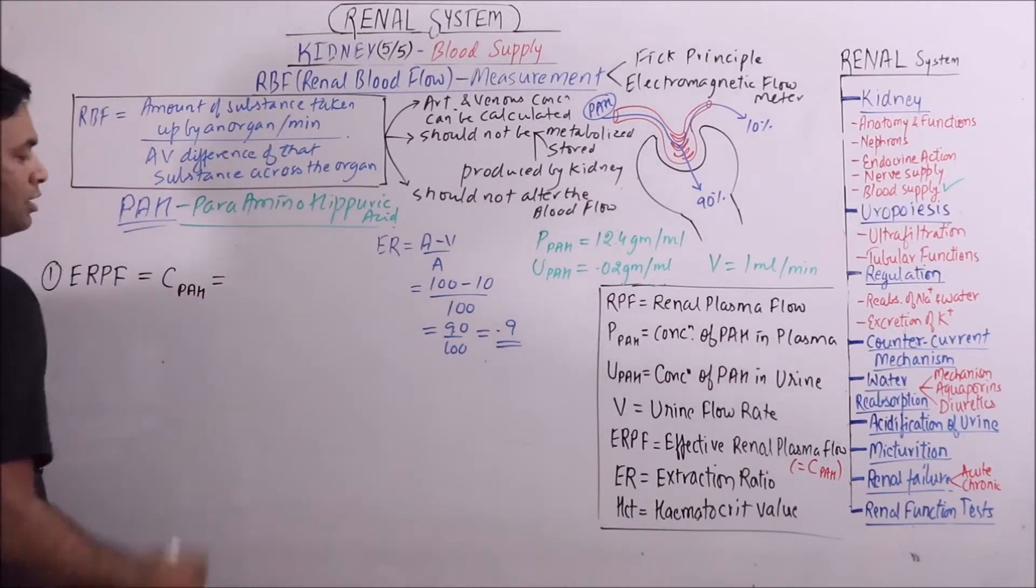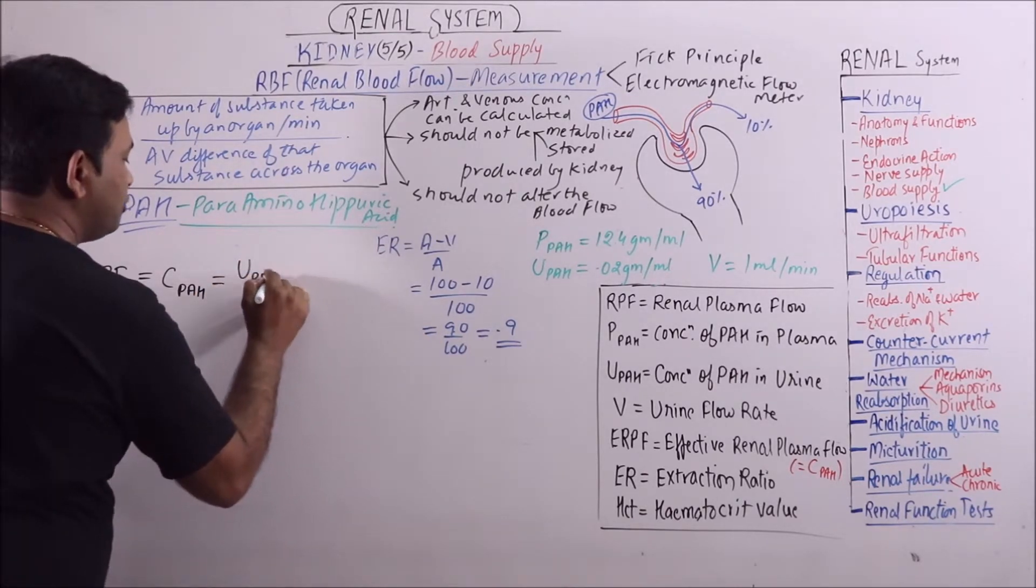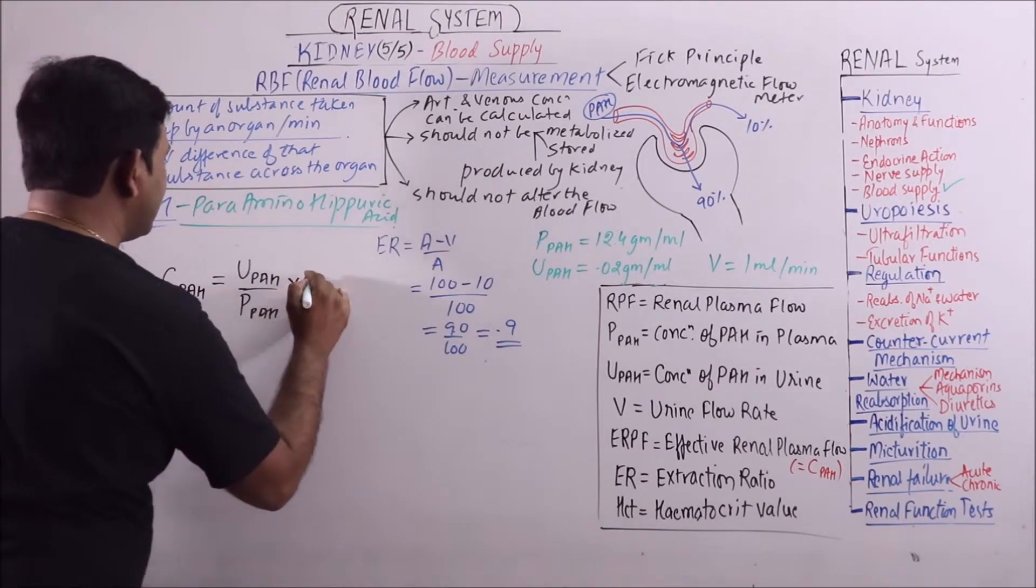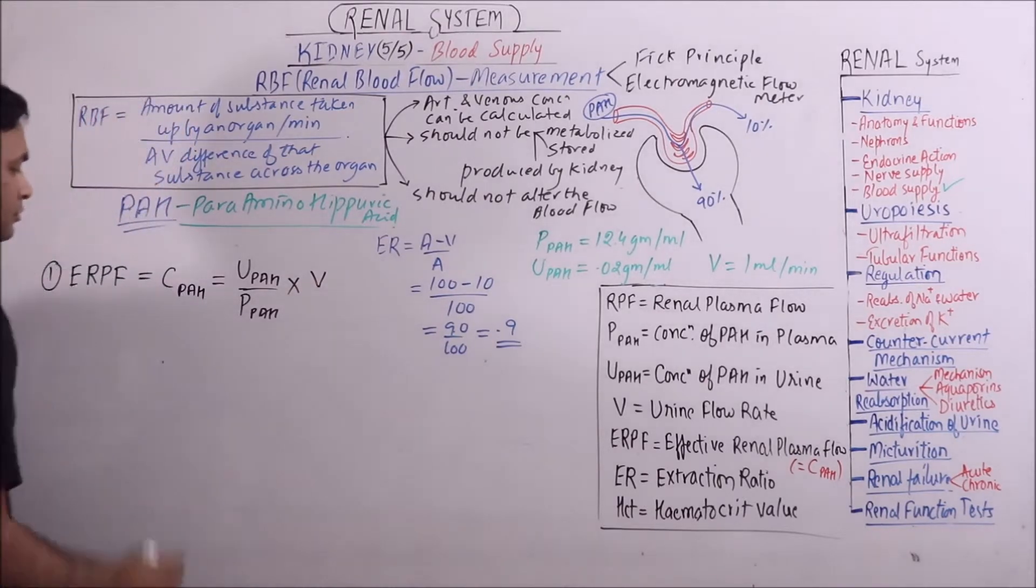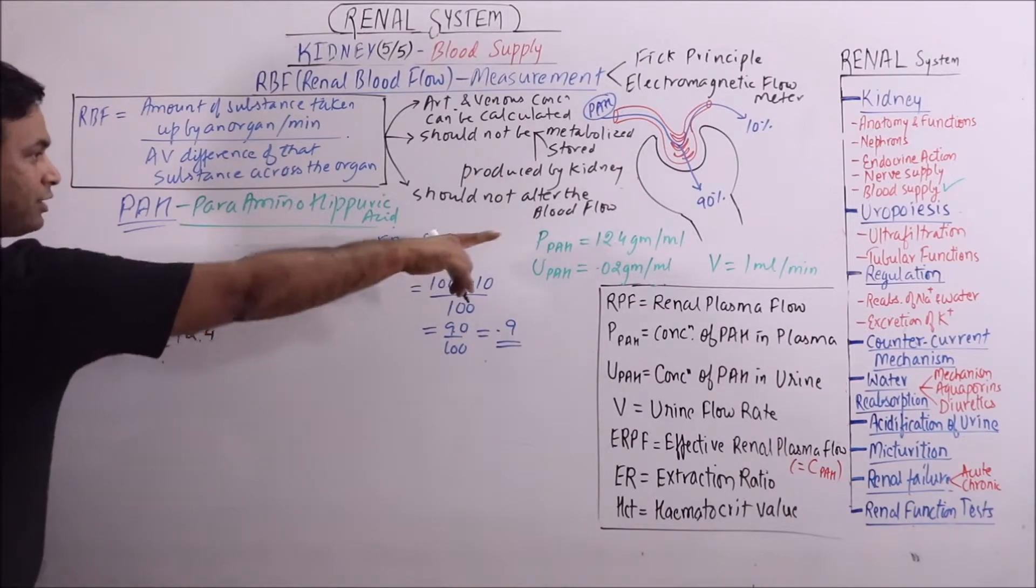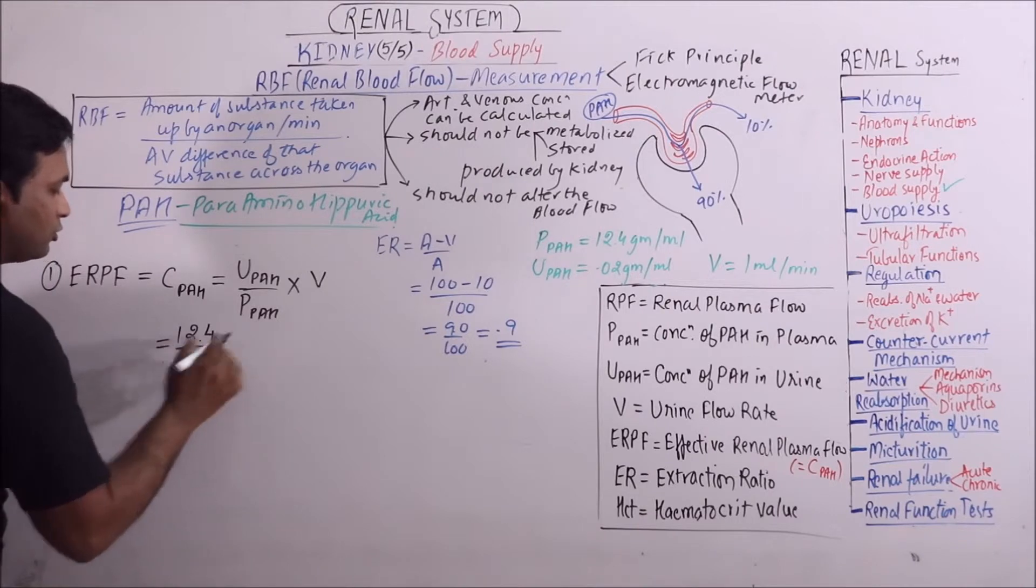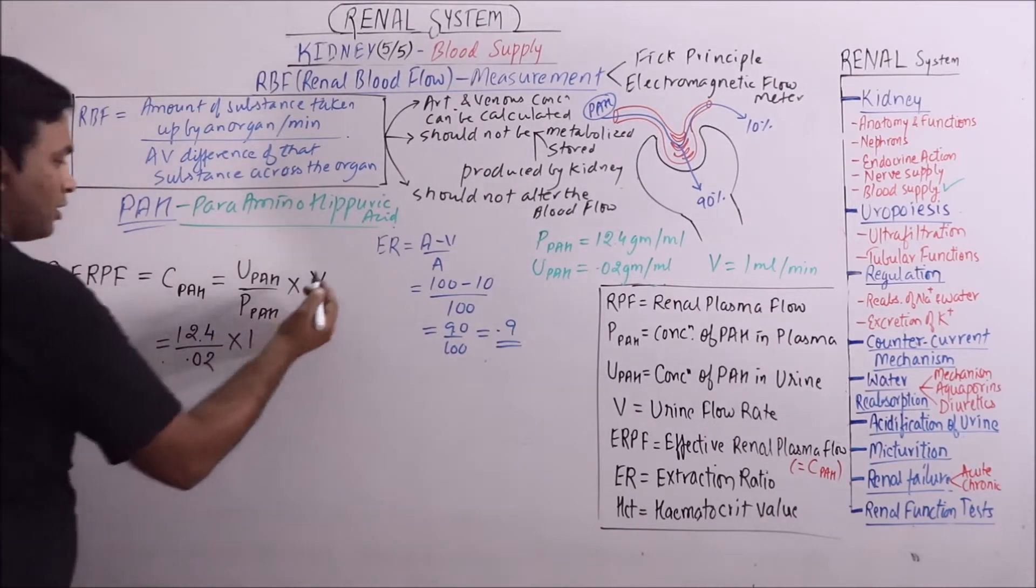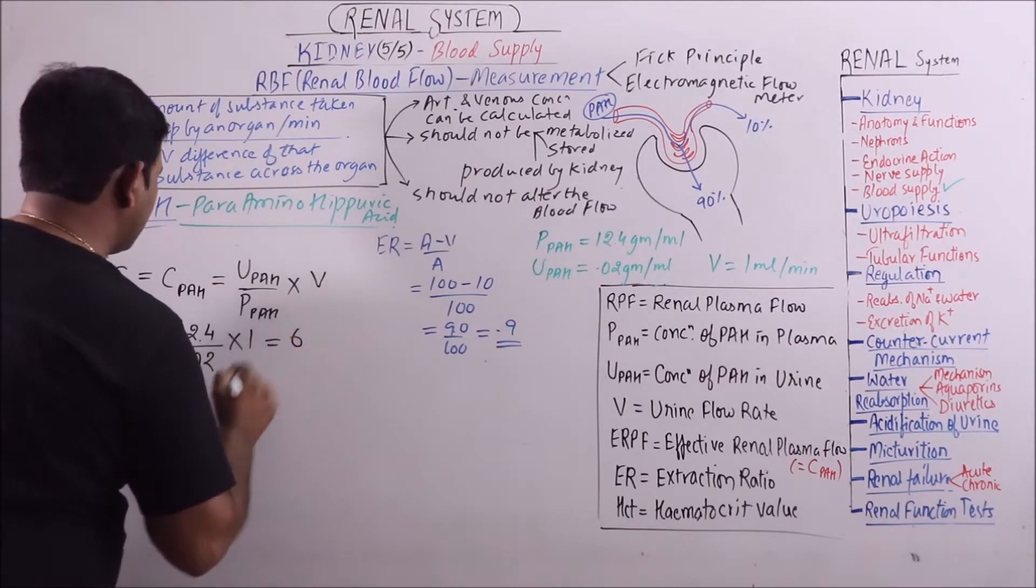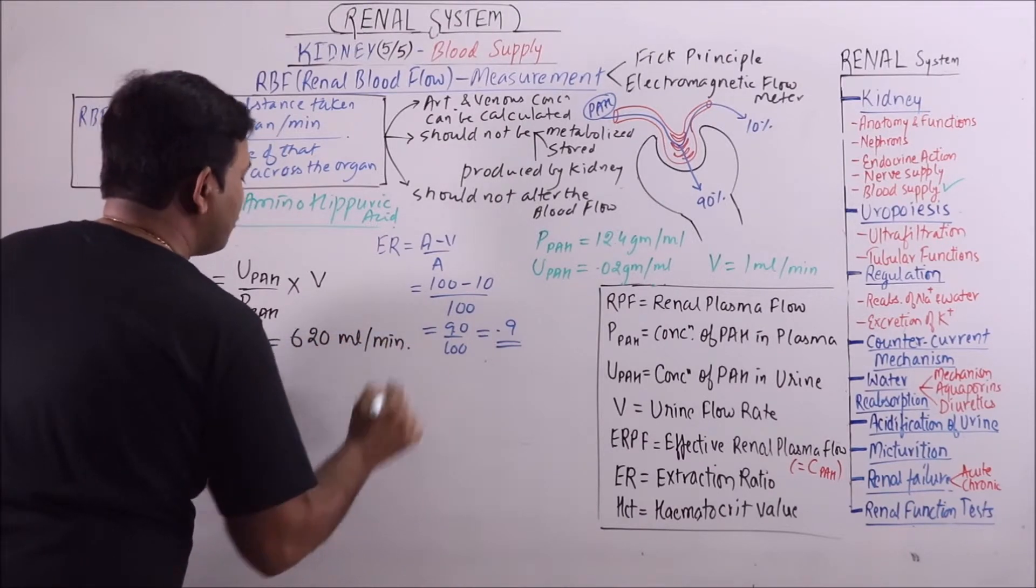The formula for calculation of clearance of PAH is UPAH upon PPAH times urine flow rate. So that is 12.4 upon 0.02 times 1, which comes out to be 620 ml per minute.